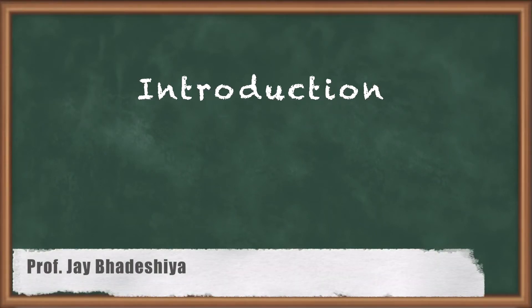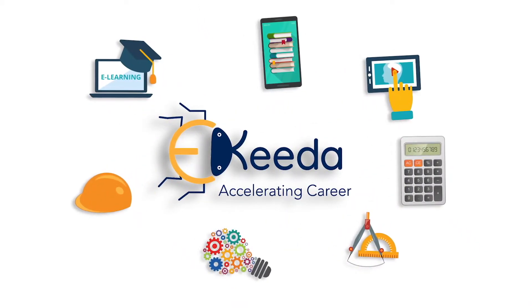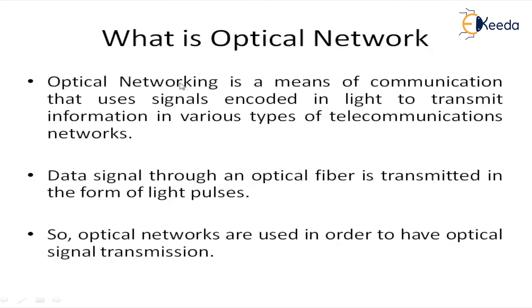Optical networking is a means of communication that uses signals encoded in light to transmit information in various types of telecommunication networks. Data signals through an optical fiber are transmitted in the form of light pulses, so optical networks are used in order to have optical signal transmission.